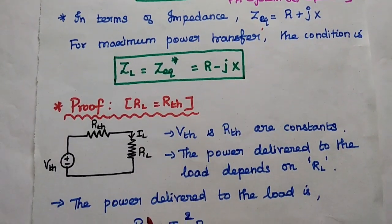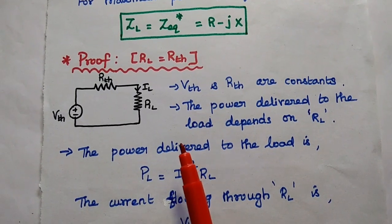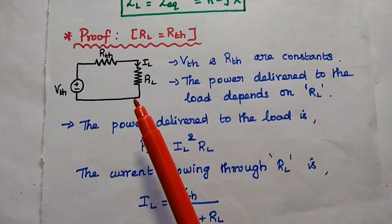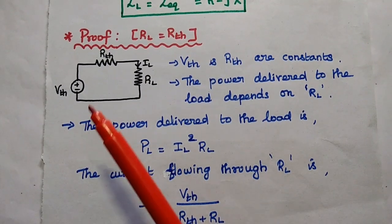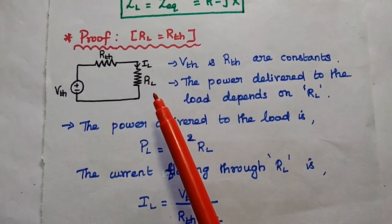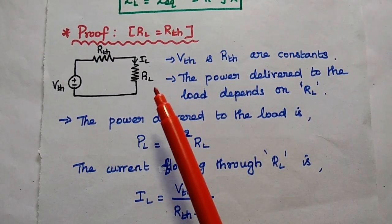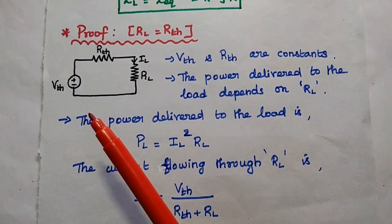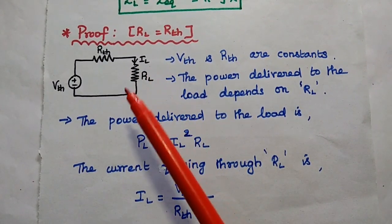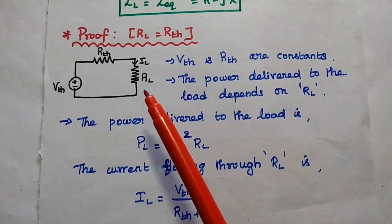Next we are going to prove this concept: RL is equal to RTH for maximum power transfer. We consider the Thevenin's equivalent circuit — VTH in series with RTH and then the load resistor. The current flowing through this load resistor is IL, that is the load current. As stated, VTH is a constant and RTH is also a constant, so the power delivered to this load depends on the variable load resistor.